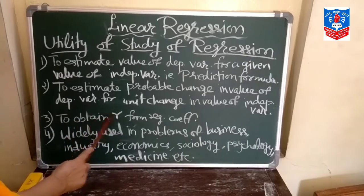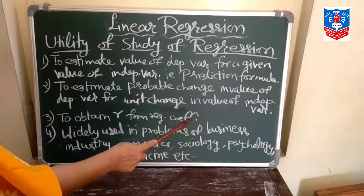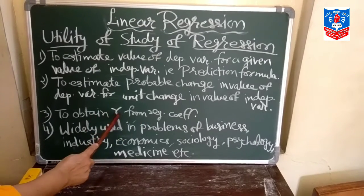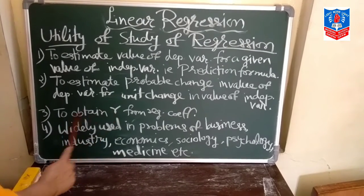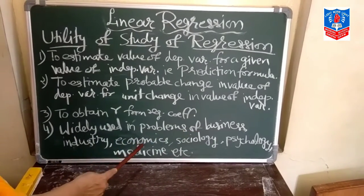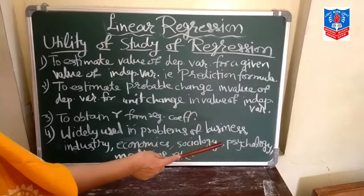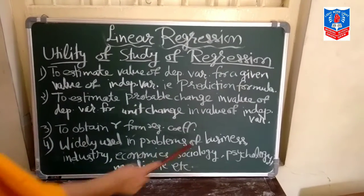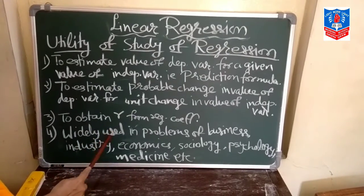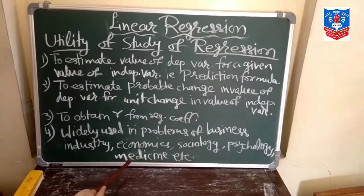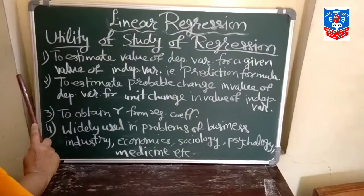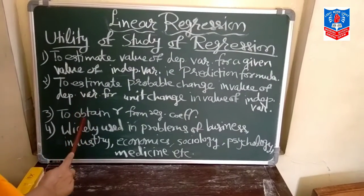The third use is that we can obtain R from the regression coefficients. The fourth use is that regression is widely used in problems of business, industry, economics, sociology, psychology, medicine, and so on. In all these fields, the regression coefficient is useful for solving problems. These are the four main uses of the study of regression. This is the end of this session. Thank you.